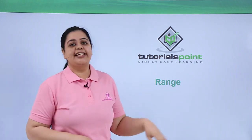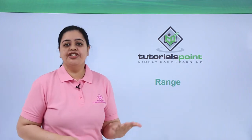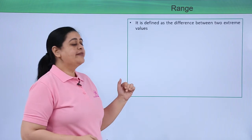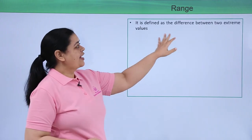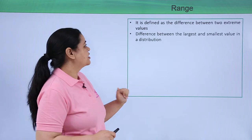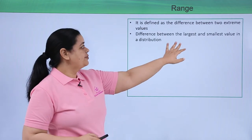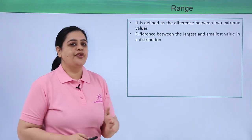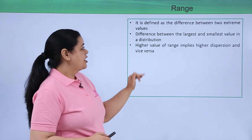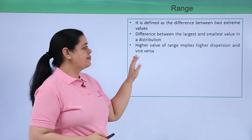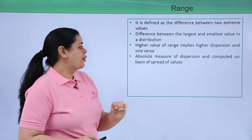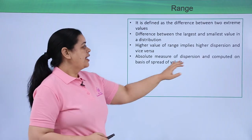Let's now understand about range, the first measure of dispersion. Range is defined as the difference between the two extreme values — the difference between the largest and the smallest value in a distribution. A higher value of range would imply higher dispersion, and vice versa.